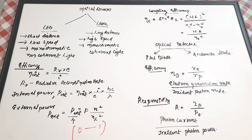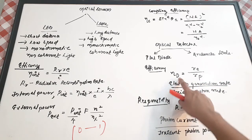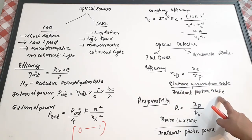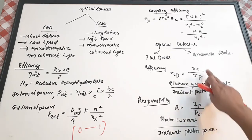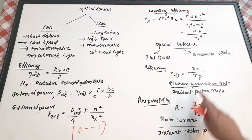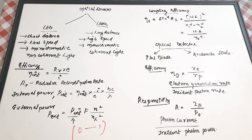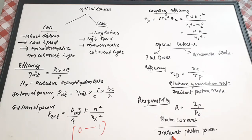Optical detectors such as photodiodes or avalanche diodes generate electrical energy corresponding to the incident light energy. The detector efficiency η_D is the electron generation rate divided by the incident photon rate: η_D = Re / Rp. The responsivity of a detector R = Ip / P0, where Ip is the photocurrent and P0 is the incident optical power.